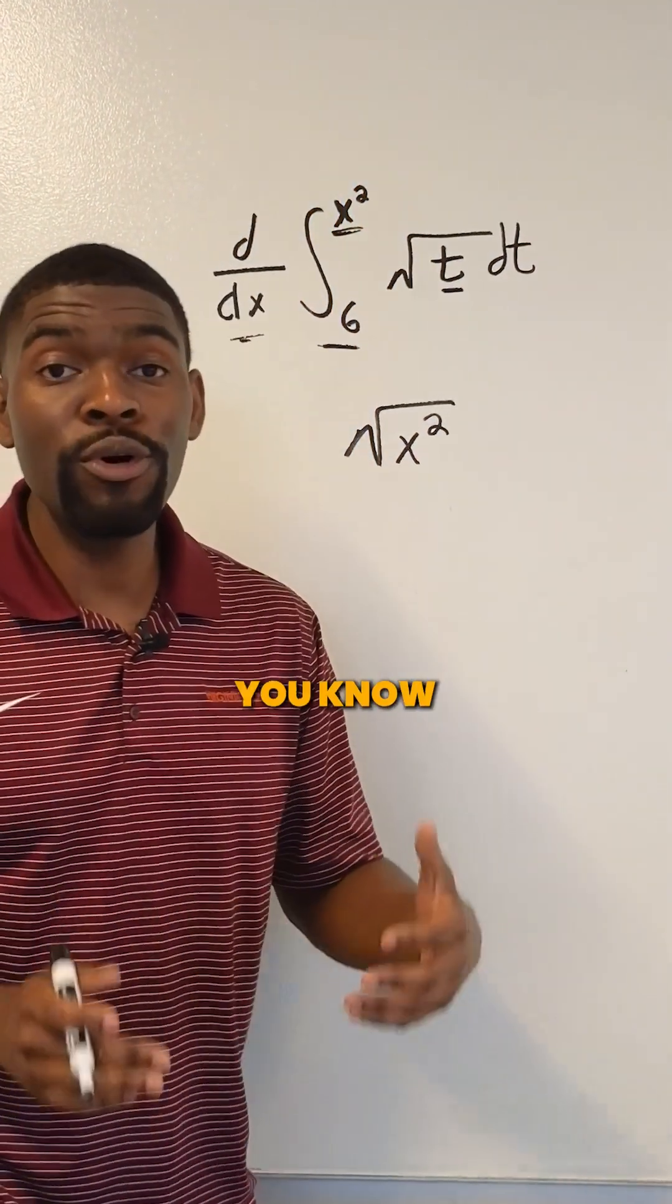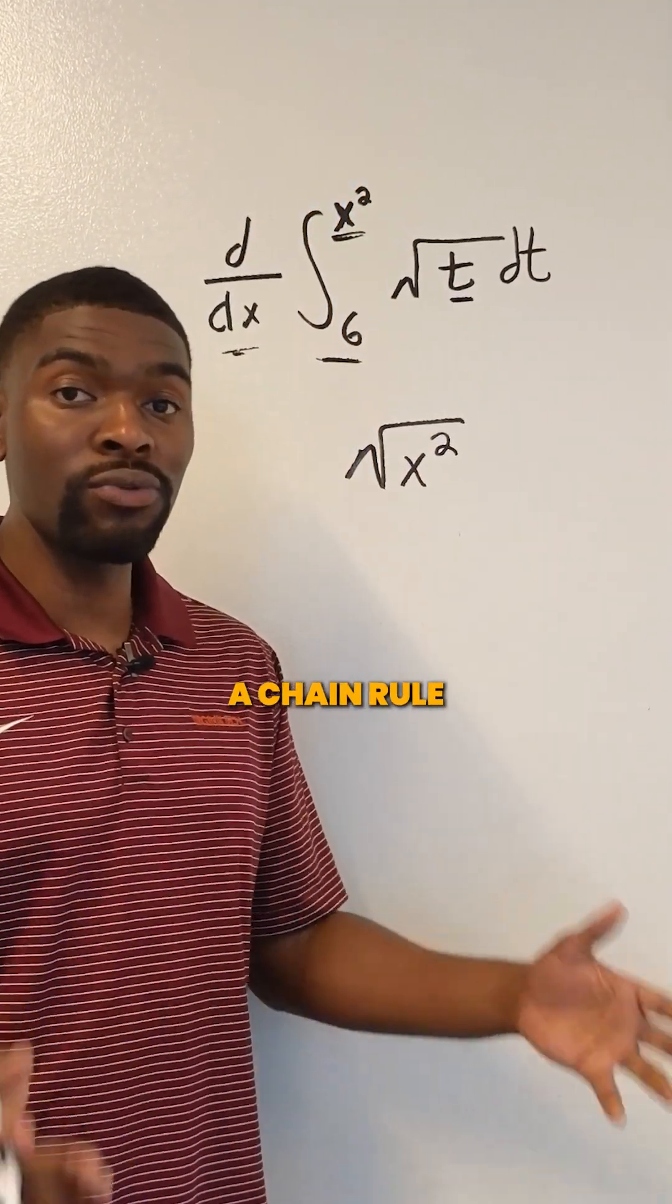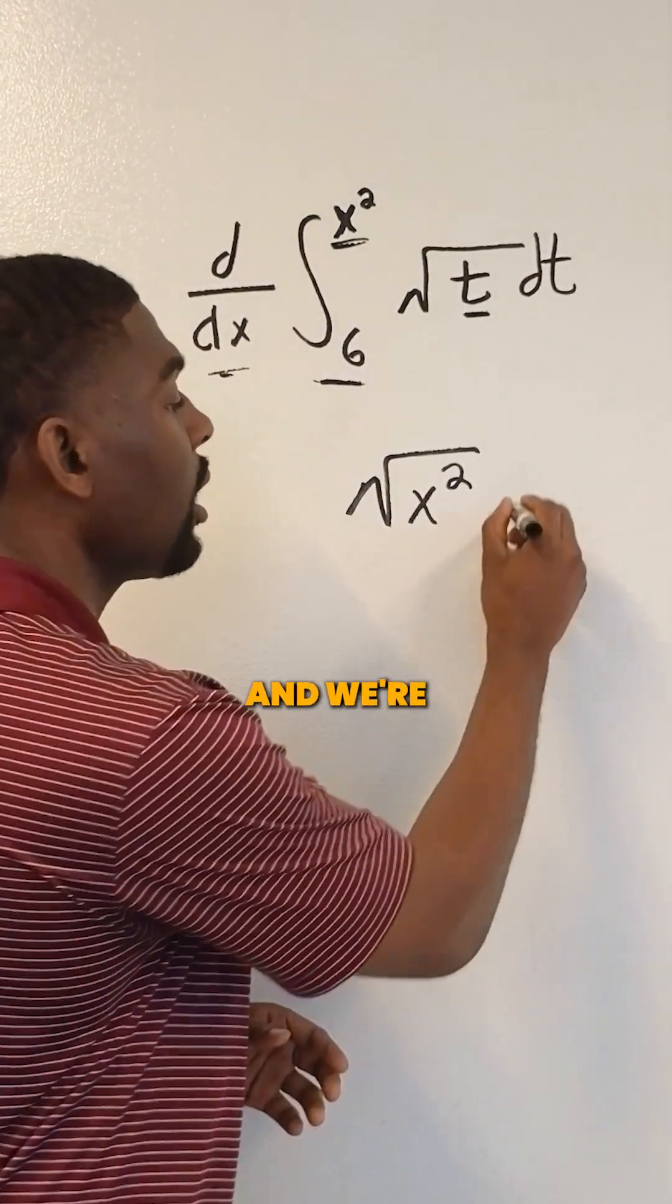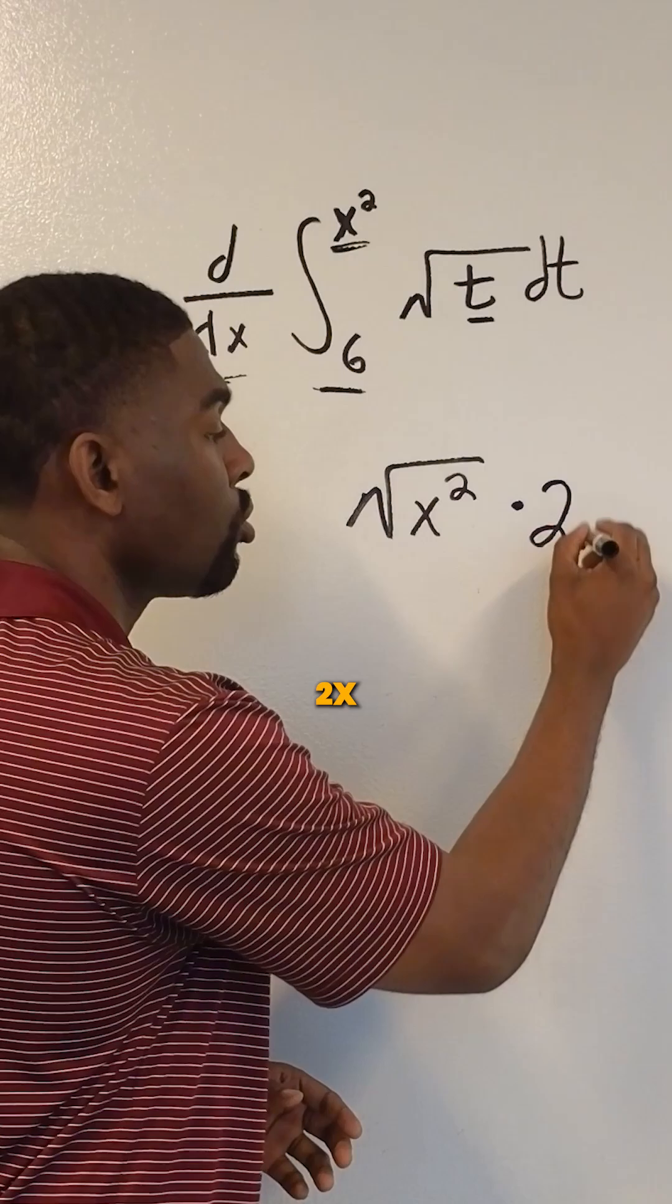If you've taken AP calculus before, you know this is called the chain rule. When we multiply by the derivative of an inside function, we get times 2x.